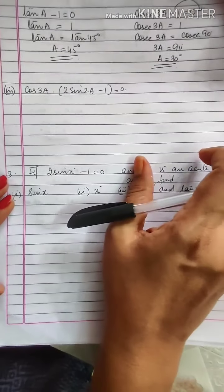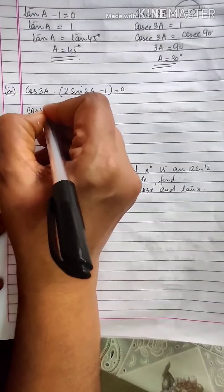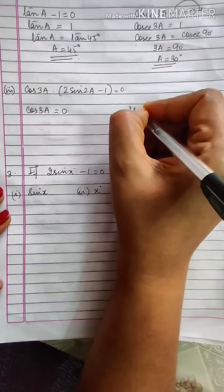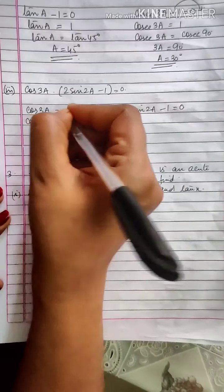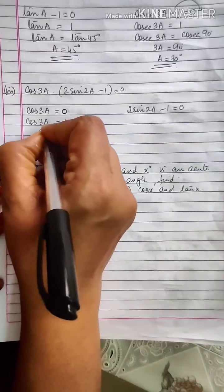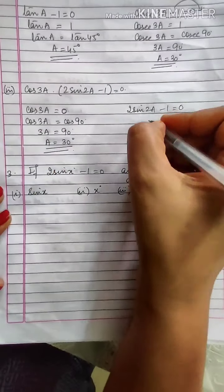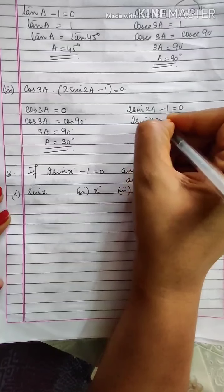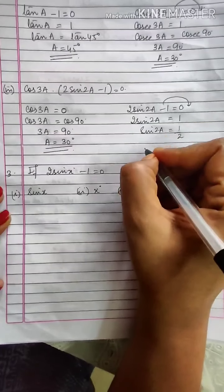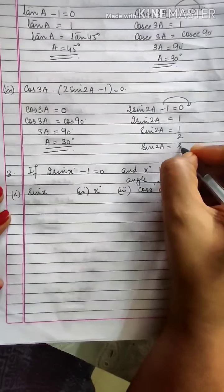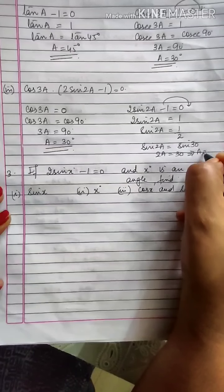Next: cos 3A times (2 sin 2A minus 1) equal to 0. You get 2 equations. From cos 3A equal to 0: cos 90 gives 3A equal to 90, so A equals 30 degrees. Remember, don't cancel cos. From 2 sin 2A minus 1 equal to 0: transposing gives sin 2A equal to 1 upon 2, which is sin 30, so 2A equals 30 and A equals 15 degrees.